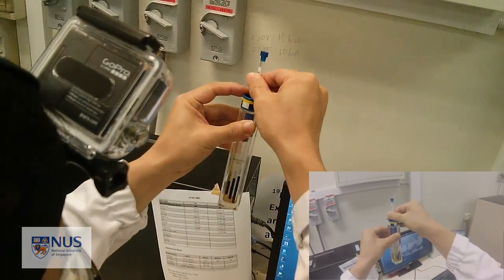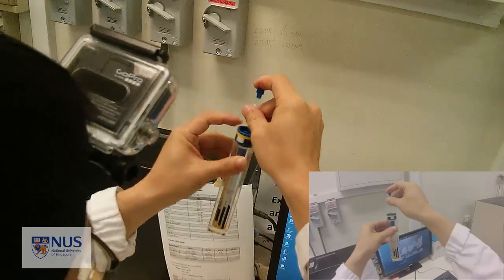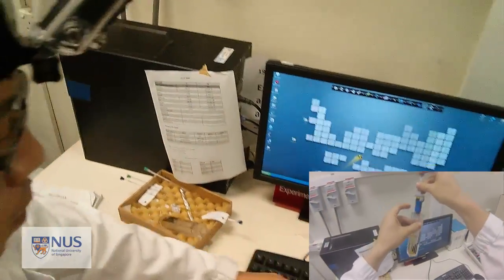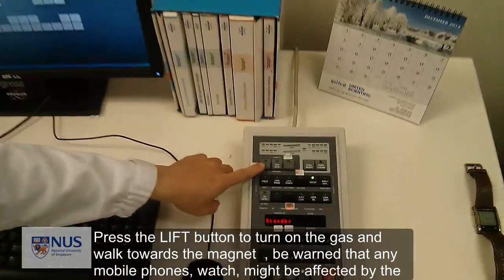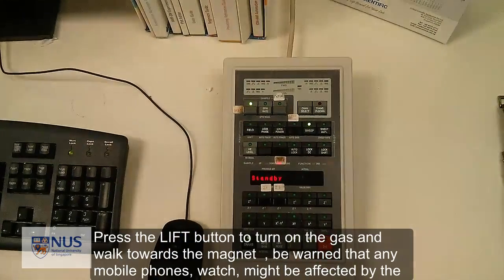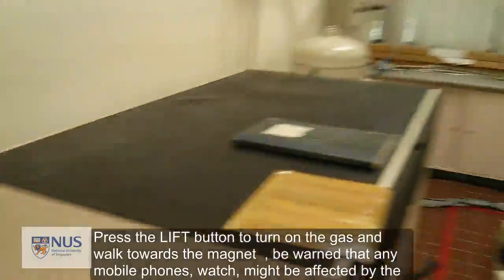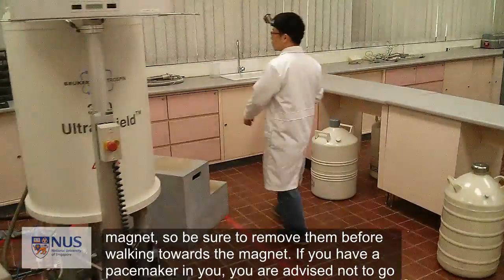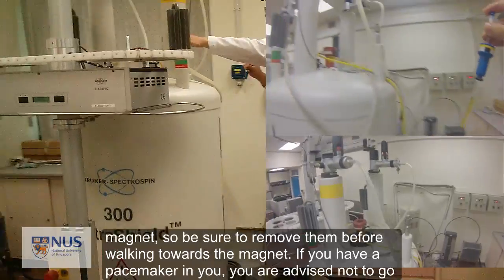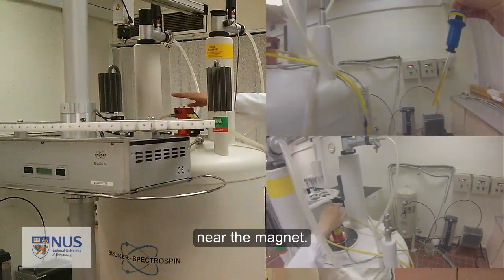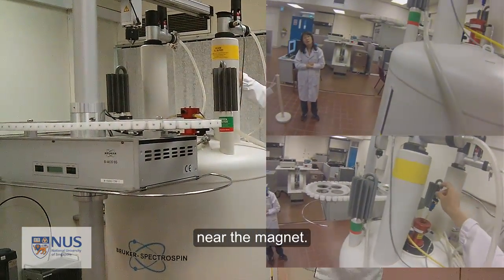If you have a pacemaker, you are advised not to go near the magnet. Press the lift button to turn on the gas and walk towards the magnet. Be warned that any mobile phones or watches might be affected by the magnet, so be sure to remove them before walking towards the magnet.